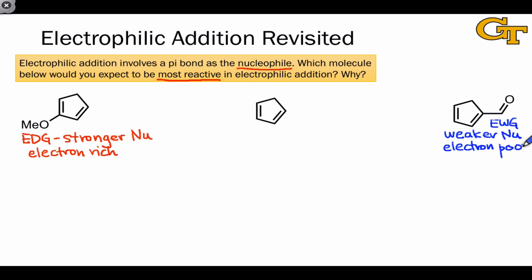And naturally then, they're less willing to donate electrons or act as a nucleophile. And so in electrophilic addition, which involves the pi bond as a nucleophile, we would expect the molecule containing the electron donating group to be the most reactive.